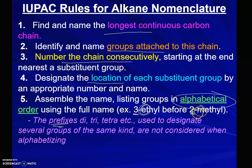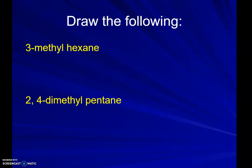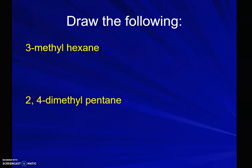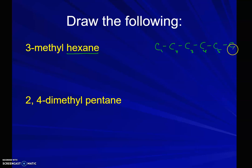I personally don't like this last rule, but I don't make the rules — we do it that way anyway. So 3-ethyl comes before 2-methyl. Let's try some stuff. Let's draw 3-methylhexane. If it is hexane, that is a 6-carbon structure: 1, 2, 3, 4, 5, 6. And if we number them 1 through 6, it'll give us a better indication of where we put our substituents.